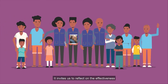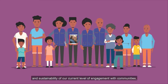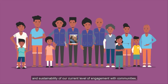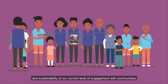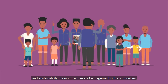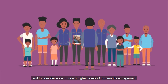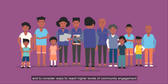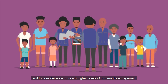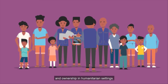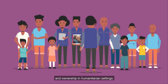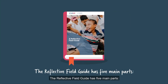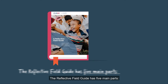It invites us to reflect on the effectiveness and sustainability of our current level of engagement with communities, and to consider ways to reach higher levels of community engagement and ownership in humanitarian settings. The Reflective Field Guide has five main parts.